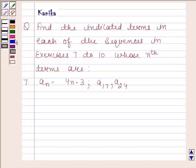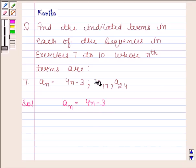Let us begin with the solution. The nth term is given as an = 4n - 3. We need to find a17 and a24.